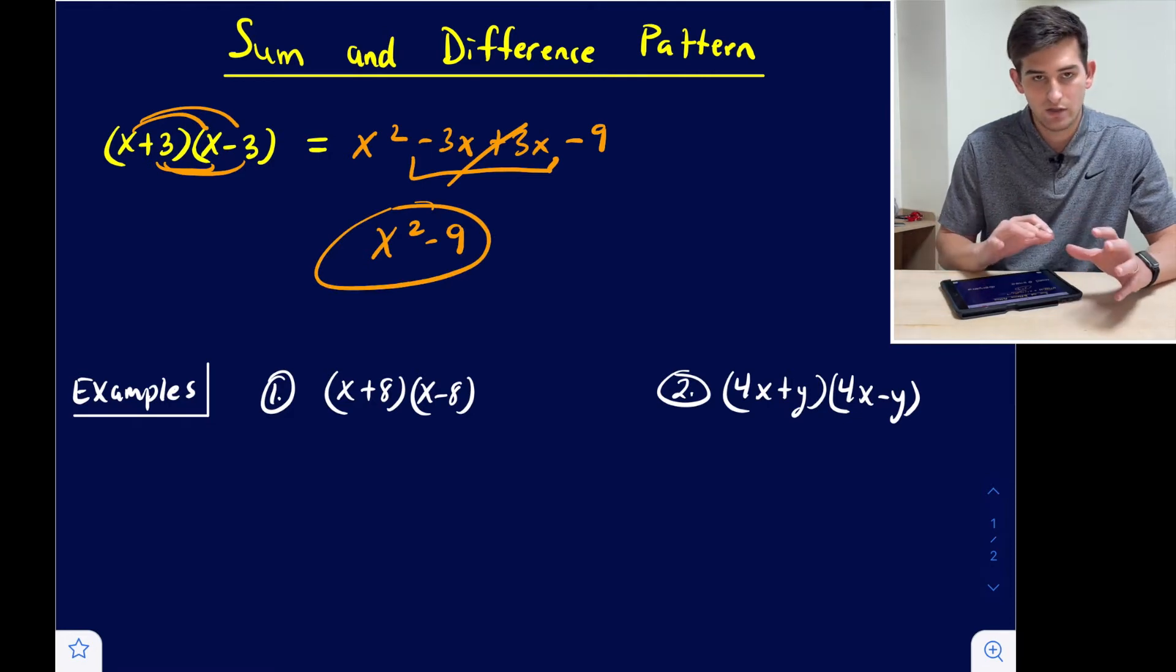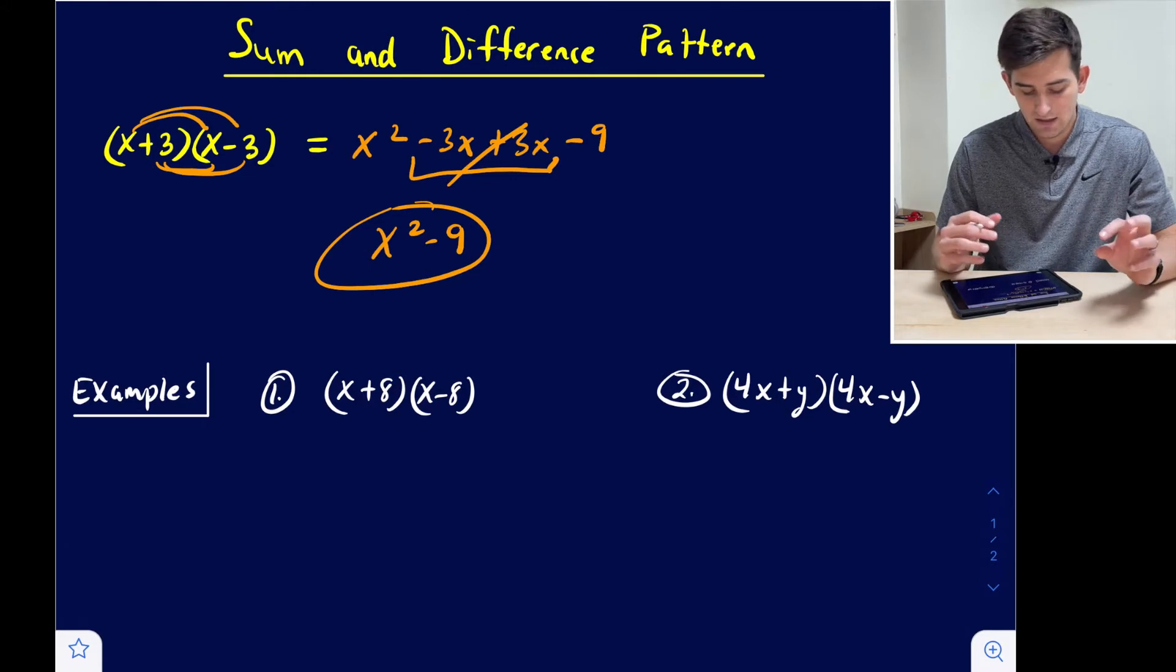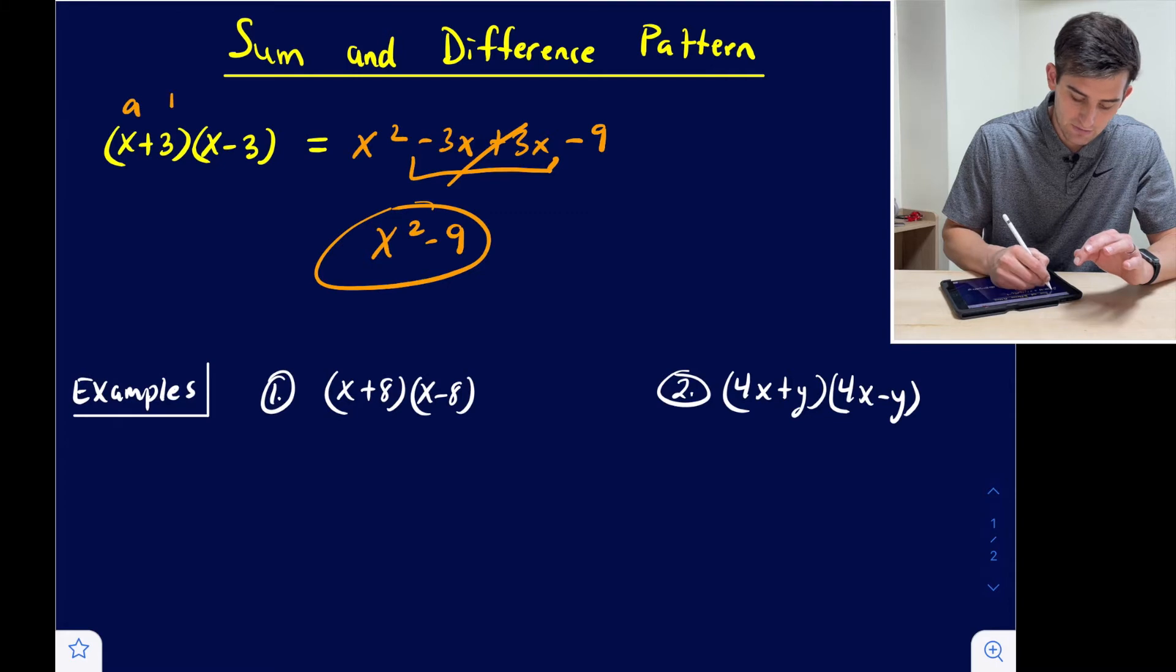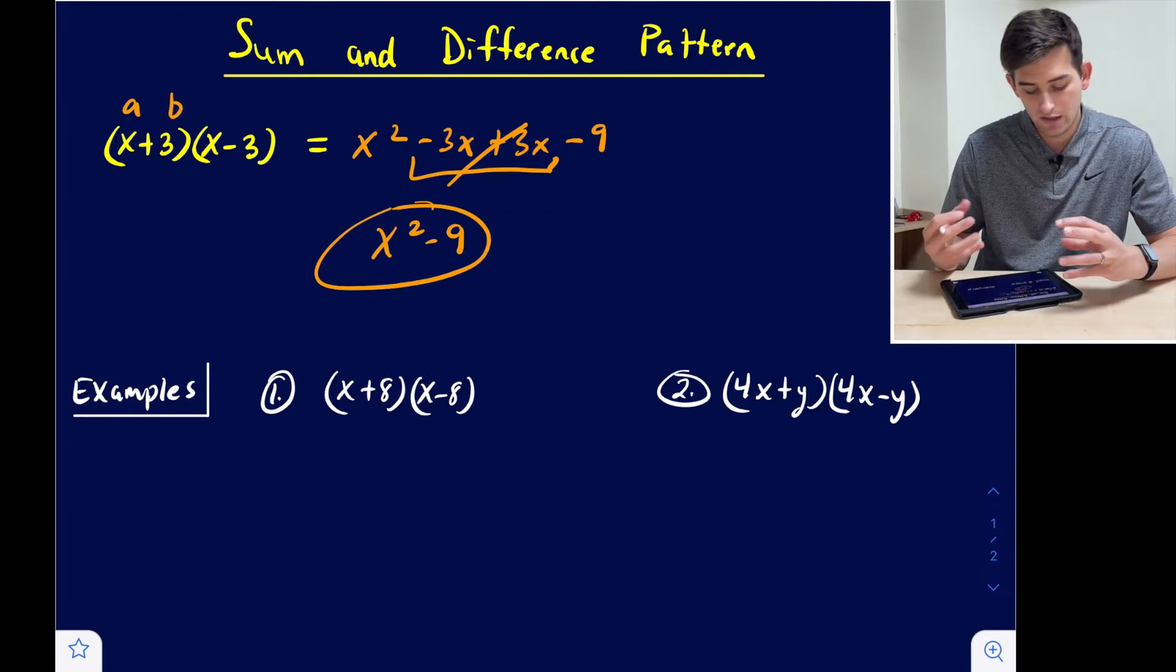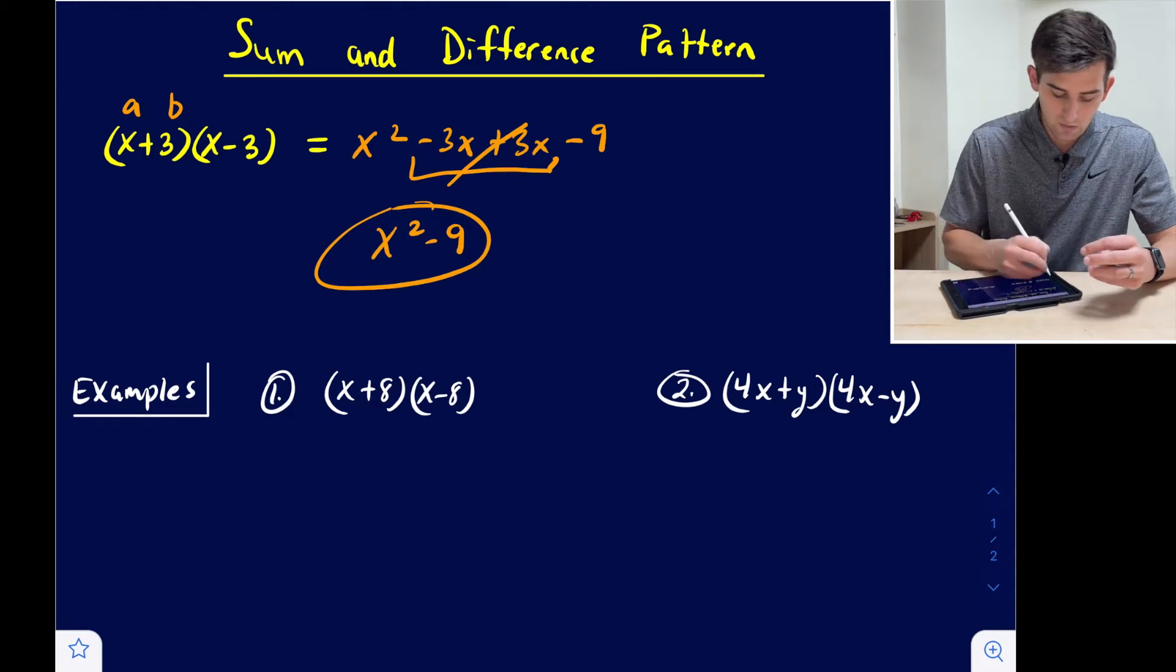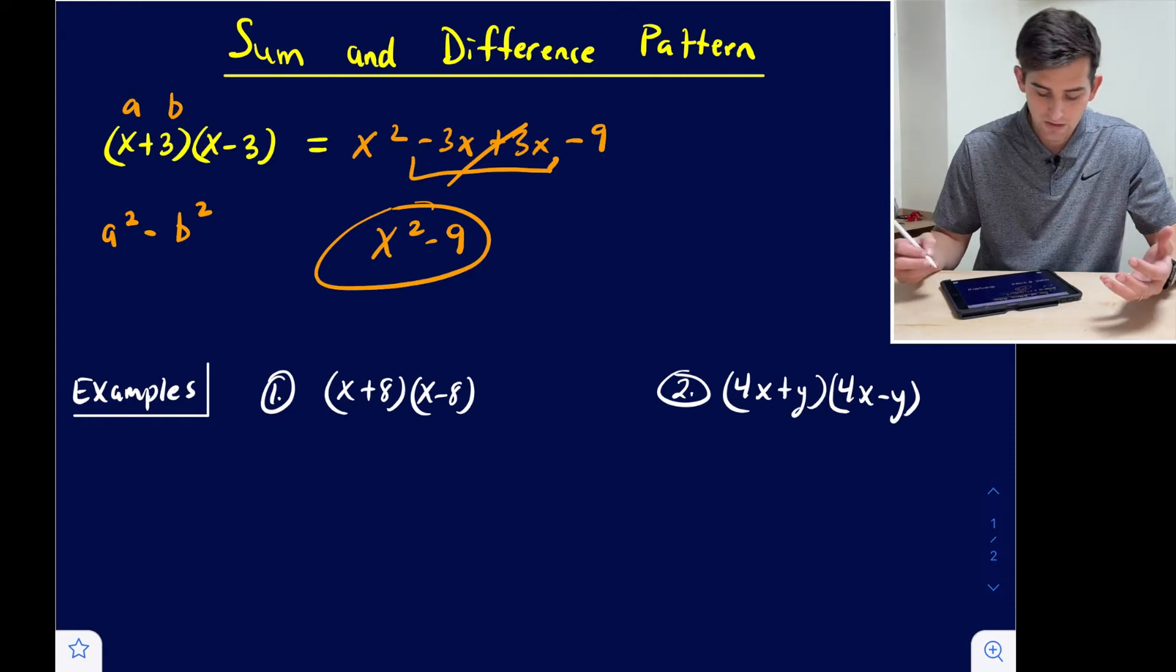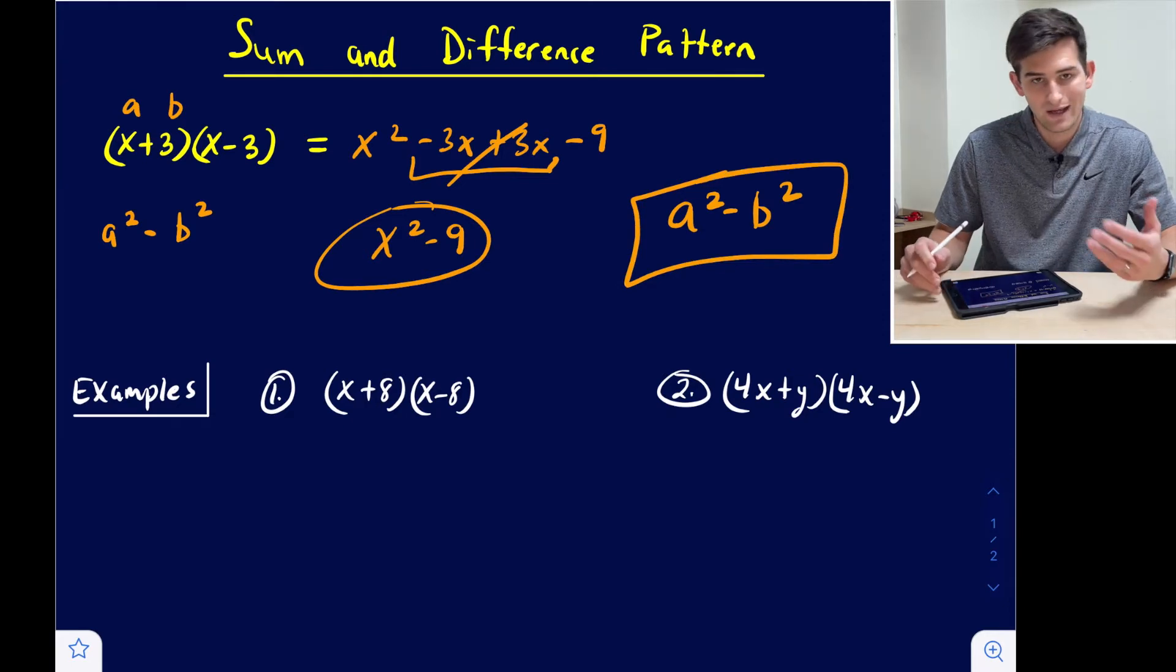If we go back to our original two binomials, we can identify each term as a and b. So x is a and 3 is b. What did we do to x and 3 to end up with x squared minus 9? Well, we took a and squared it, and we took b and squared it, and we had a subtraction in the middle. So our sum and difference pattern is just a squared minus b squared. That's our pattern.